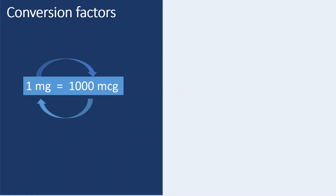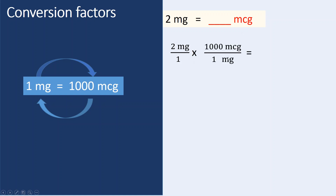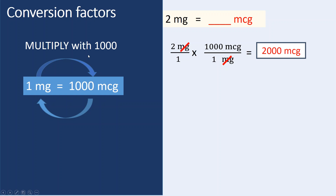Next, another conversion factor: 1 milligram equals 1000 micrograms. To convert milligrams to micrograms, take an example — 2 milligrams equals how many micrograms? Set up the dimensional analysis: 2 milligrams, with 1 milligram equal to 1000 micrograms. Milligrams cancel out, so 2 times 1000 gives you 2000 micrograms. Alternatively, multiply milligrams by 1000 to get micrograms.